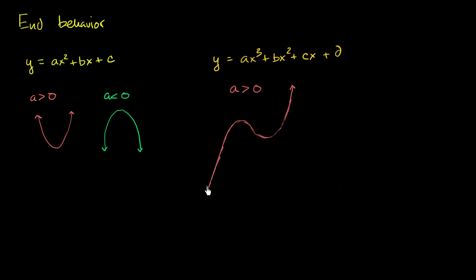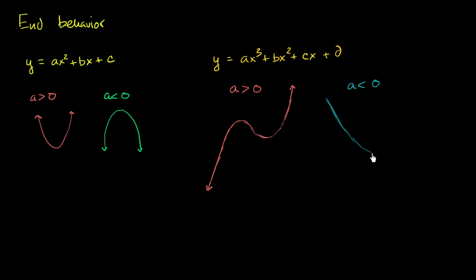So it might look something like this when a is greater than 0. But what about when a is less than 0? We would flip it. If a is less than 0, when x is really negative, you're going to multiply that times a negative a, and you're going to get a positive value. And then its end behavior — it starts decreasing again.